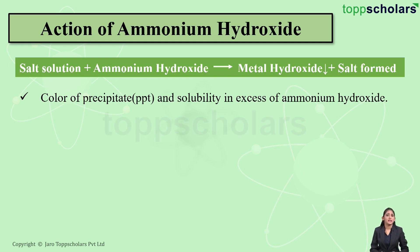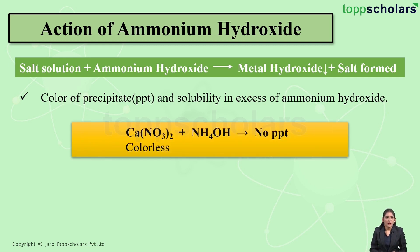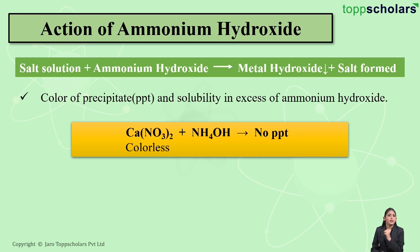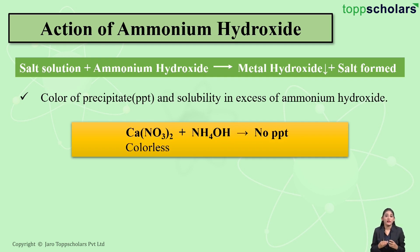Let us take an example to understand this. Here I have calcium nitrate solution, which is a colorless solution. If I add drops of ammonium hydroxide into this solution, we do not get any precipitate formation. This is because the concentration of OH⁻ ions is too low to form the precipitate.